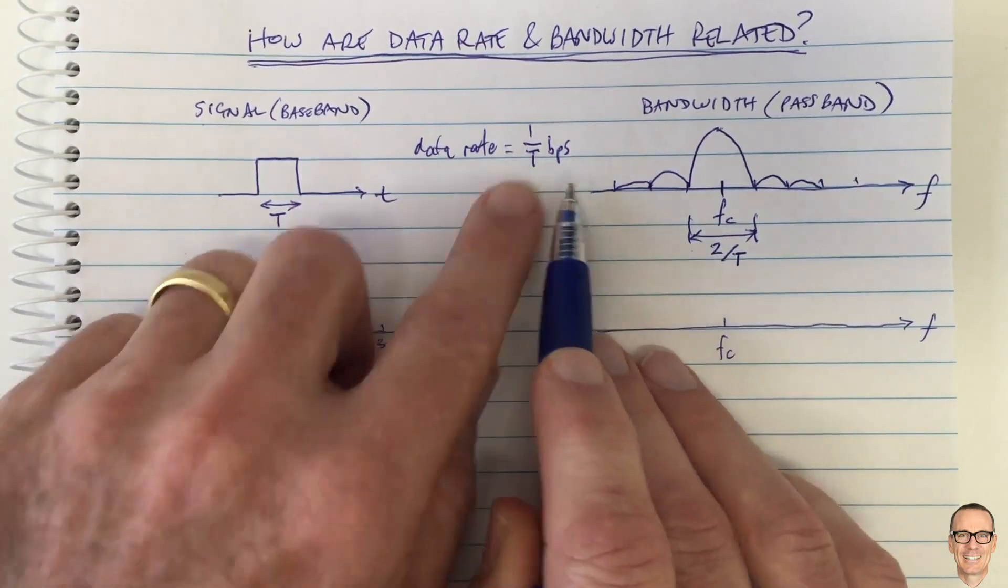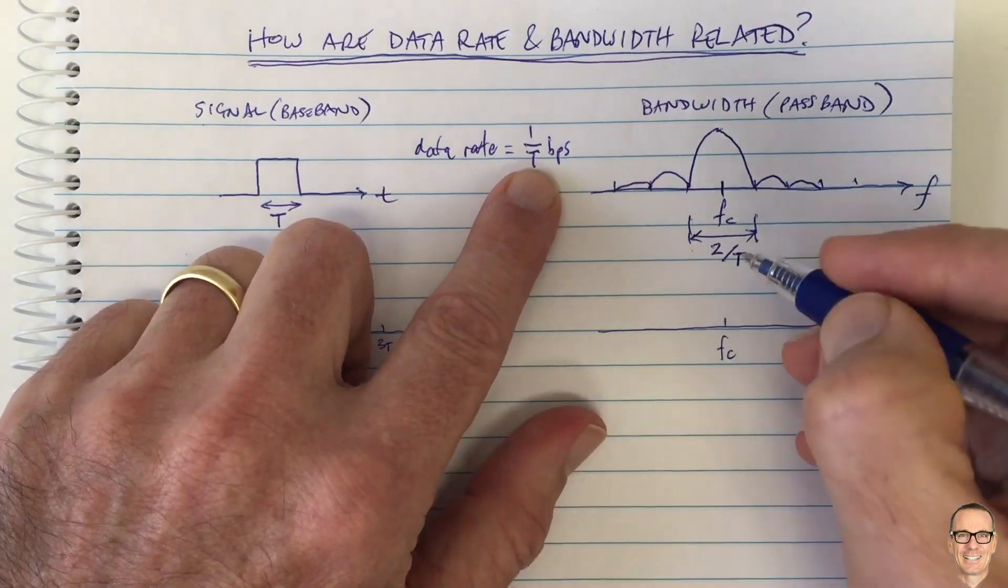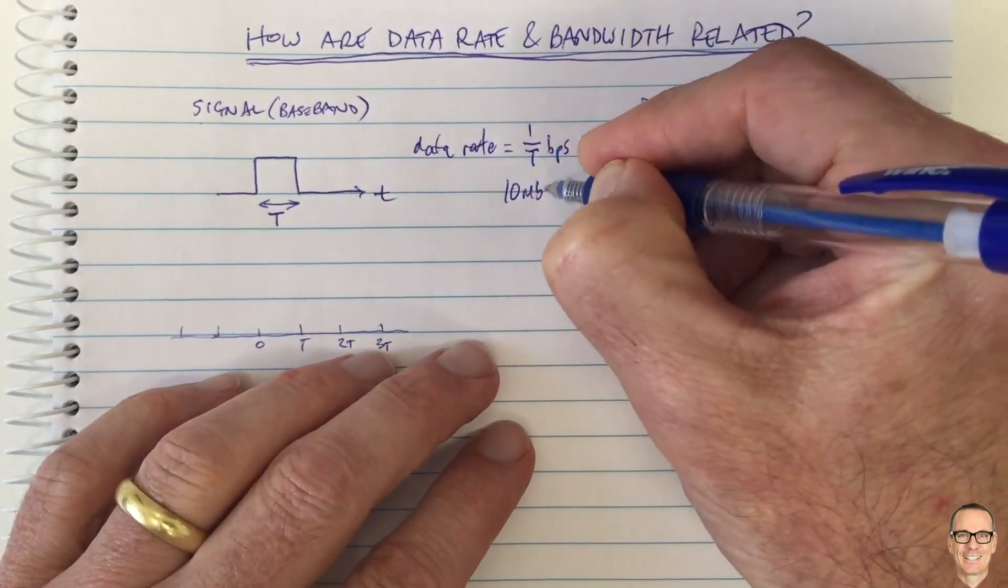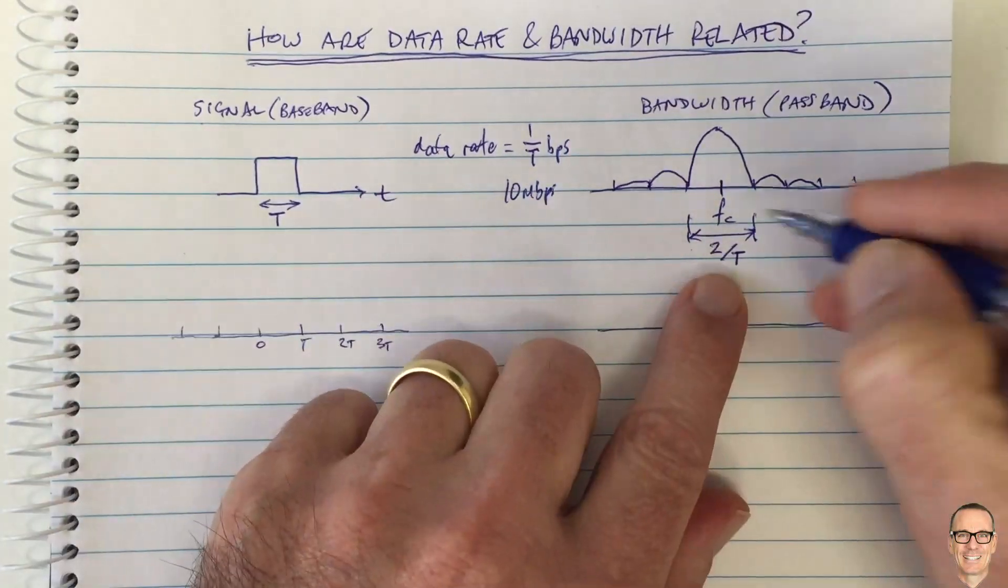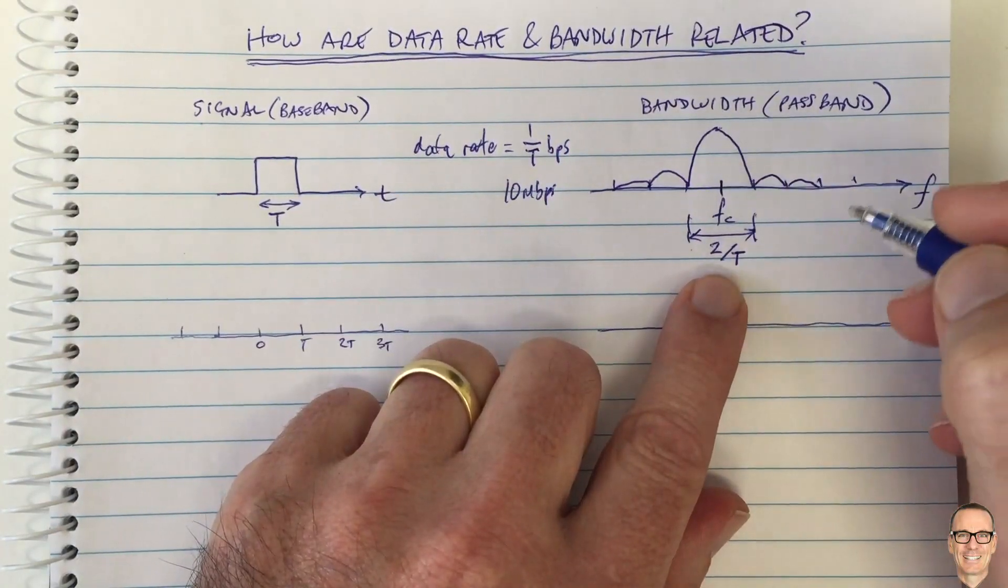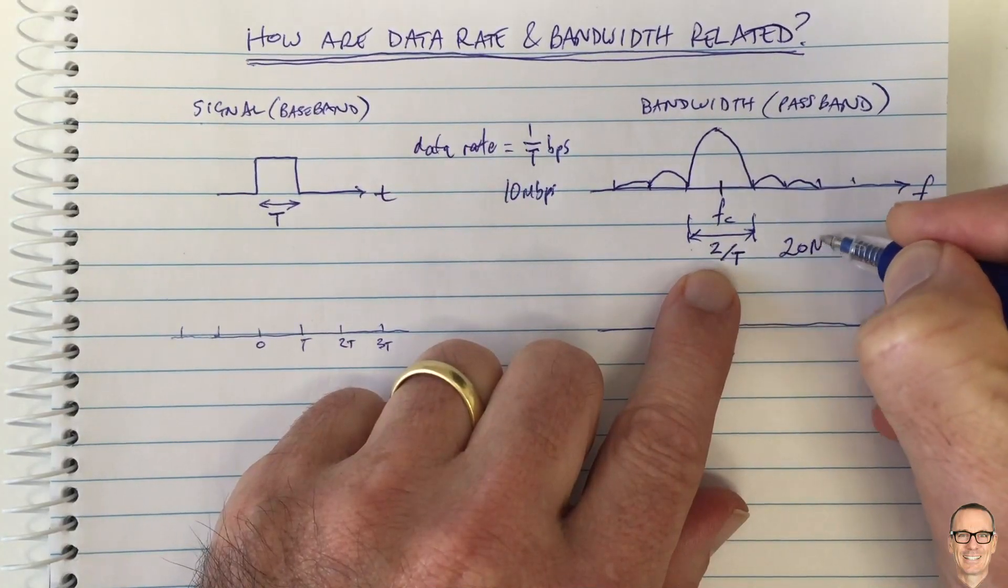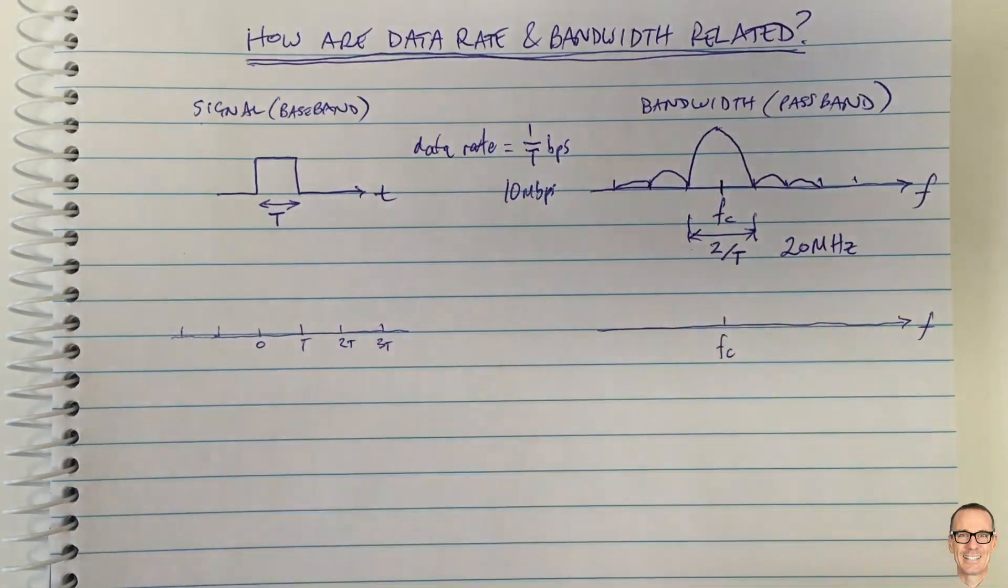The data rate is 1 on T bits per second. For example, if we were sending at 10 megabits per second, then this bandwidth here in the passband is 2 times 1 on T, so that would be 20 megahertz of frequency that we would need.